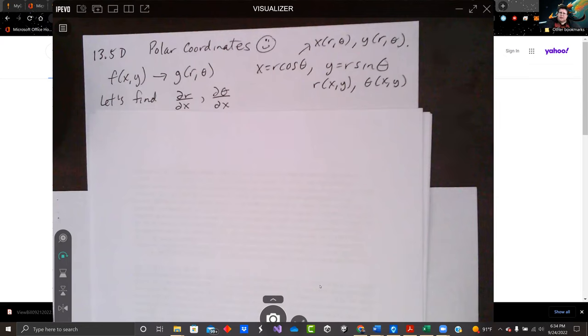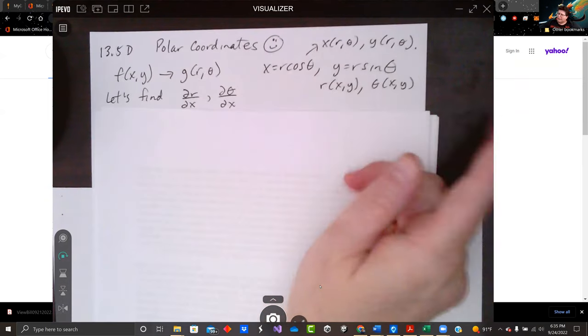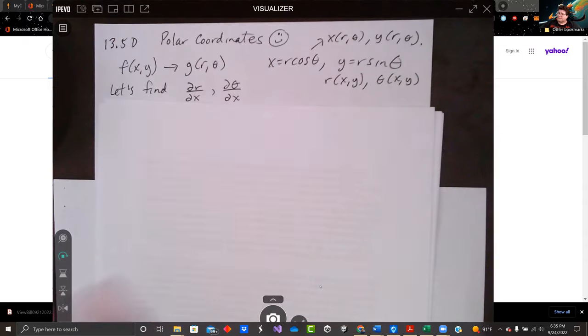We are looking at the chain rule for multivariable functions, and we're looking at independent variables x and y and r and theta. So we have a function of x and y, and we're looking at r and theta. Notice we have x equals r cosine theta, y equals r sine theta. I didn't write them down, but we know r is a function of x and y. It's the square root of x squared plus y squared. We know theta is a function of x and y also. It's tangent inverse of y over x.